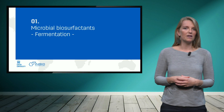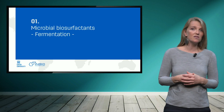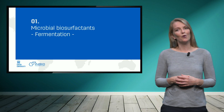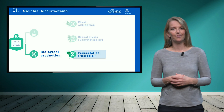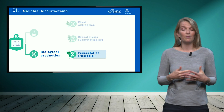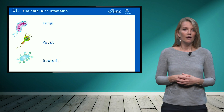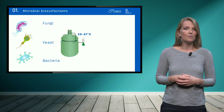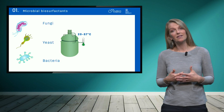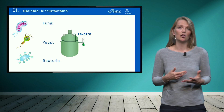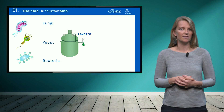Microbial biosurfactants are produced by microorganisms through a process called fermentation. These microorganisms can be bacteria, yeast, or fungi. Fermentation is a biological process which occurs in a bioreactor and typically at low temperatures between 20 and 40 degrees Celsius.